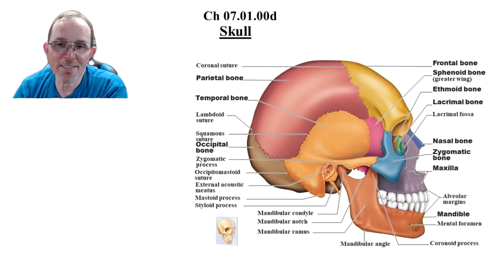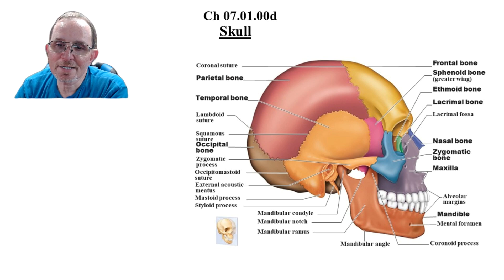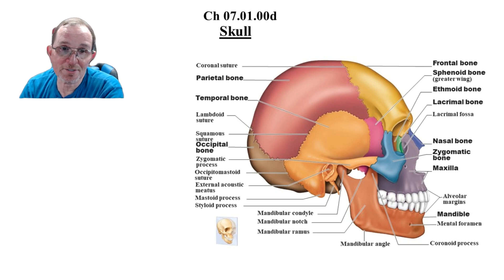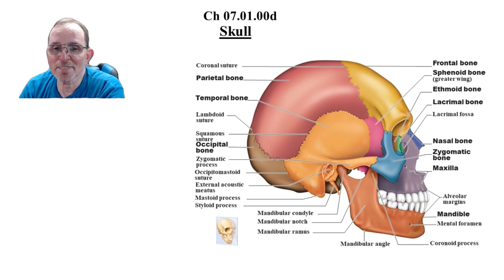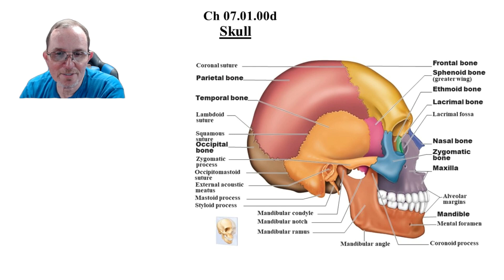Here's the same thing from a lateral view. You can see the parietal, the occipital, temporal, and frontal bones. This is part of the sphenoid bone — most of the time we're going to be looking at that from inside the skull, but it does have pieces on the outside, as does the ethmoid bone, which makes up part of the medial surface of the orbital cavity.